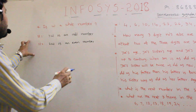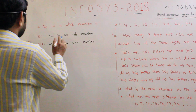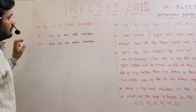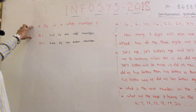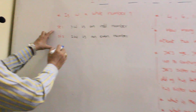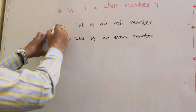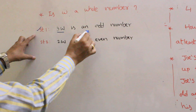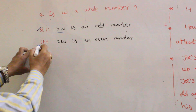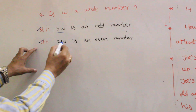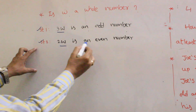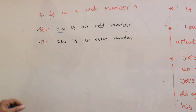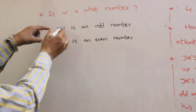In this one, an important concept: is W a whole number? That is the question. Statements — the first statement: 3W is an odd number. The second statement: 2W is an even number. Using the first statement,